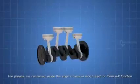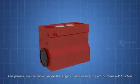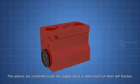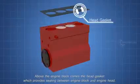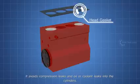The pistons are contained inside the engine block, in which each of them will function. Above the engine block comes the head gasket which provides sealing between engine block and engine head. It avoids compression leaks and oil or coolant leaks into the cylinders.